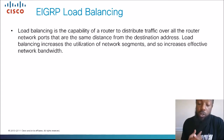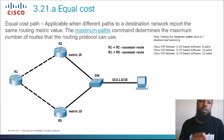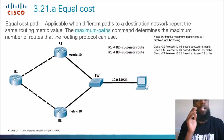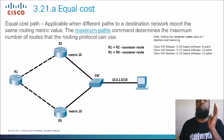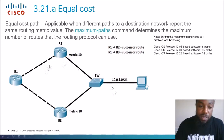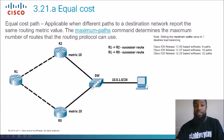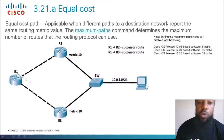Equal cost load balancing is applicable when different paths to a destination network report the same routing metric value. The maximum paths command determines the maximum number of routes the routing protocol can use. Looking at this topology, Router 1 has two ways to get to the 10.0.1.0/24 network — through Router 2 or Router 3. The metric this way is 10, and the metric the other way is 10. That's equal cost.